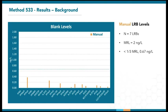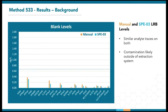Each field extraction batch contains a lab reagent blank. Here are the average blank results of seven field extractions using the vacuum manifold. The reason I'm showing the manual extraction results first is to give you a baseline of how much contamination to expect. All the compounds came out to be under the limit, even though some traces were picked up. Comparing the blank results on the SPE03, you can see that similar compounds were present. Based on these numbers and our experience, the contamination is likely coming from outside of the extraction systems.